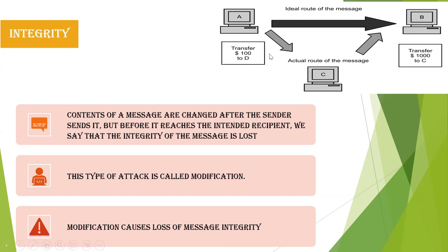For example, if A transfers $100 to B via the actual route, but the message is intercepted via another route and the amount is changed from $100 to $1000, then integrity is lost. Such modification attacks result in a loss of integrity in data transmission.